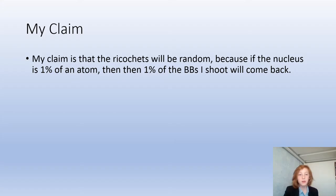My claim is that the ricochets will be random, and I also think that only about 1% of the BBs I shoot will ricochet because an atom is 99% empty space and that 1% is mostly the nucleus. So my claim is that only 1% will shoot back.